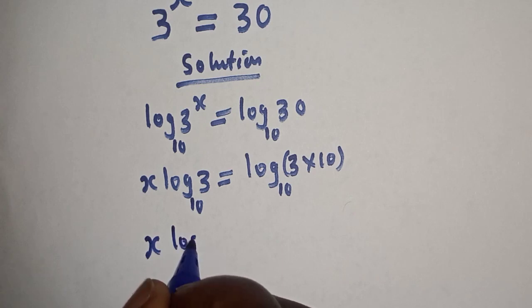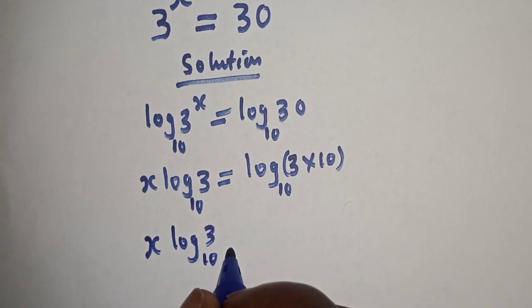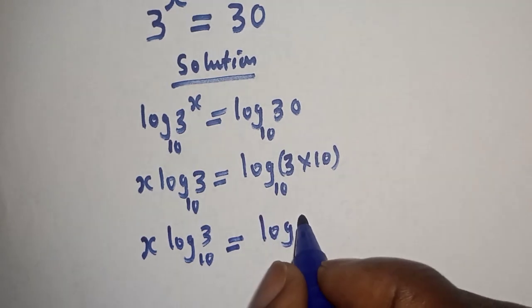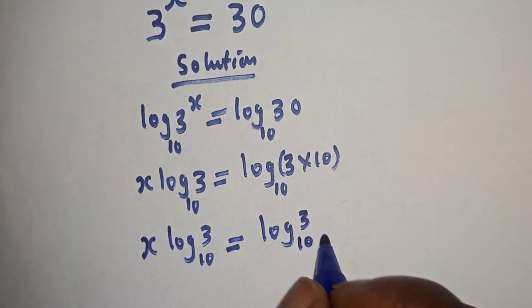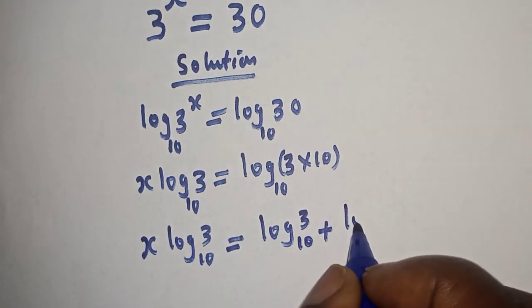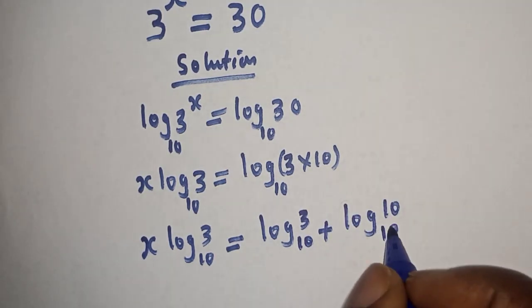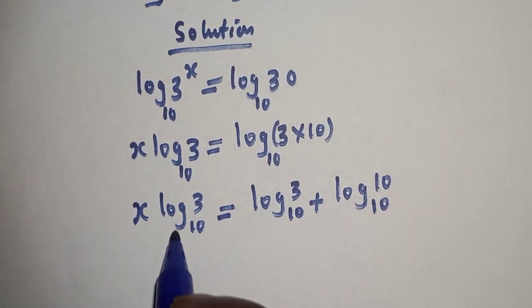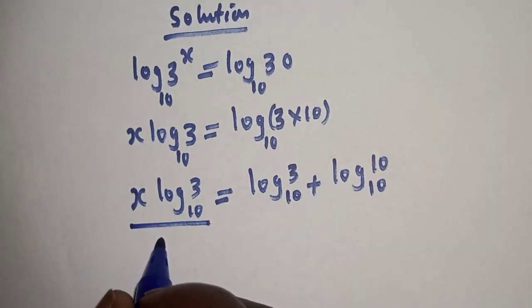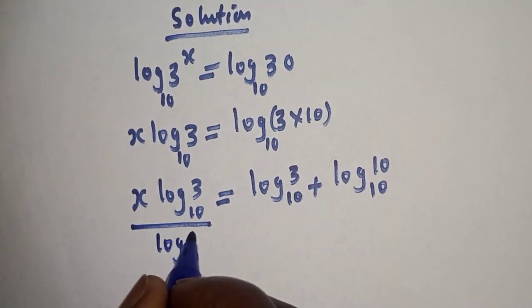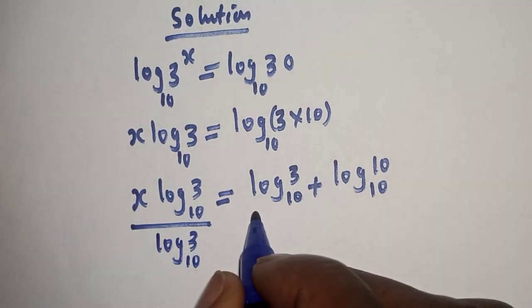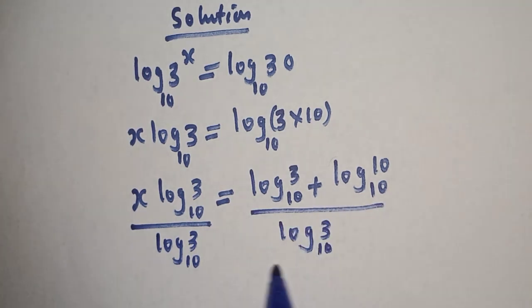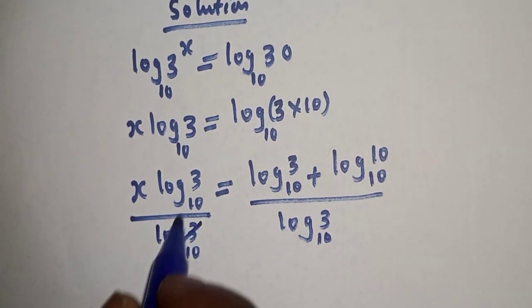x log 3 base 10 is equal to log 3 base 10 plus log 10 base 10. Let's divide all through by log 3 base 10. This will cancel this.